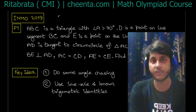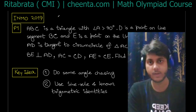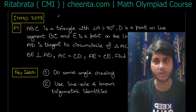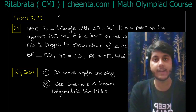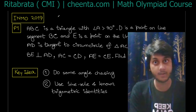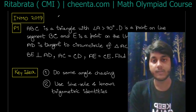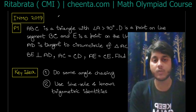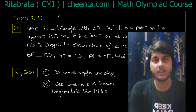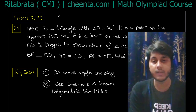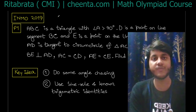The problem says: ABC is a triangle with angle A greater than 90 degrees. D is a point on line segment BC such that E is a point on line AD, and BE is tangent to the circumcircle of triangle ACD at E. AB is perpendicular to AC, and AC equals CD. We have to find angle C.